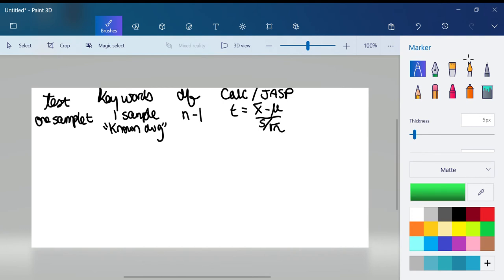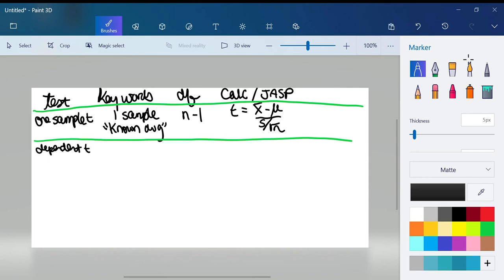Now let's do a dependent T. So a dependent T, we're going to see keywords that typically look like before and after. And so if you ever see the phrase before and after then you know for sure it has to be a dependent T because that's the only way you can analyze that.